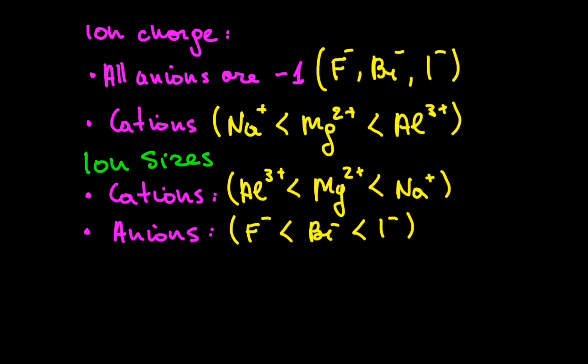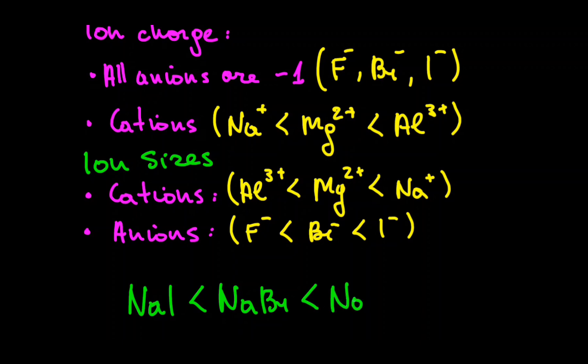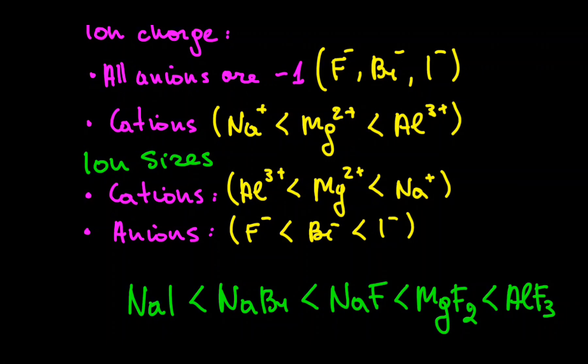So in order of increasing bond strength, sodium iodide has the weakest ionic bond because of the smallest charge and the largest ion sizes. Then sodium bromide and sodium fluoride. They have the same overall charge, however fluoride has a smaller radius. Next is magnesium fluoride because of the charge size. And the strongest ionic bond is in aluminum fluoride, the smallest ions and the highest overall charge.